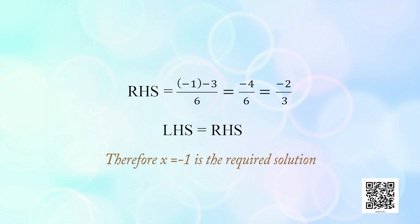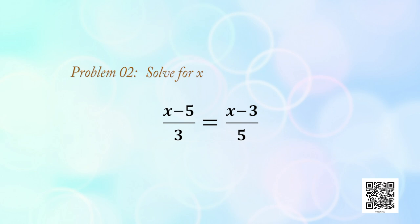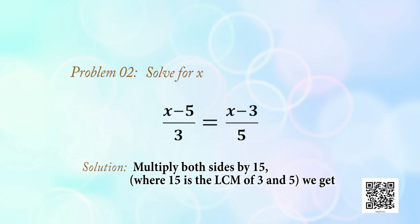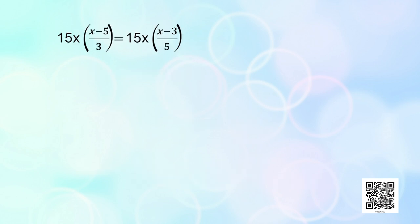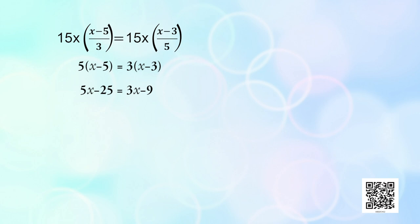Consider another problem: solve (x − 5)/3 = (x − 3)/5. To remove 3 and 5, multiply both sides by 15, the LCM of 3 and 5. This gives 5(x − 5) = 3(x − 3), that is 5x − 25 = 3x − 9. Taking x terms on one side: 5x − 3x = −9 + 25, so 2x = 16 and x = 8.